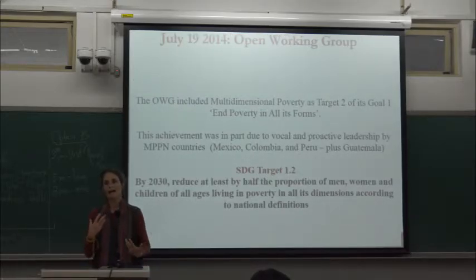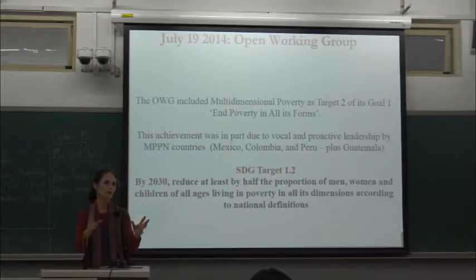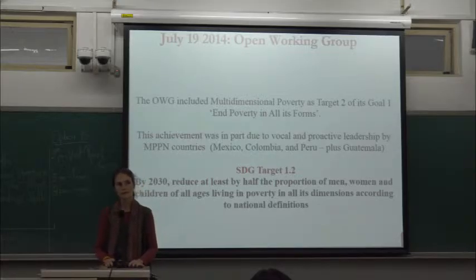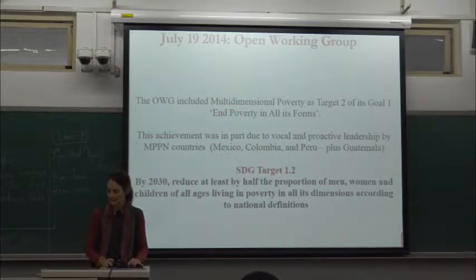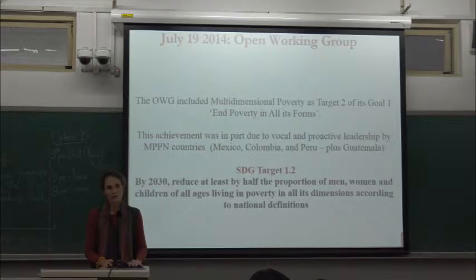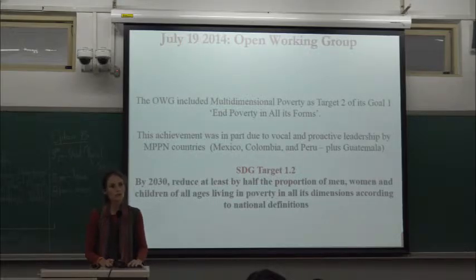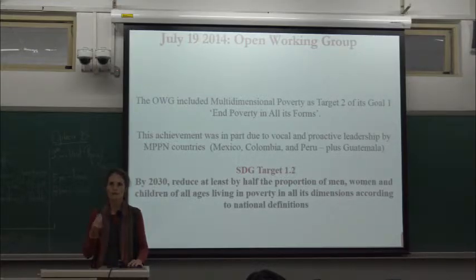The term 'poverty in all its forms and dimensions' is mentioned a number of times in the final document. An open working group met a number of times at the United Nations and proposed the same 17 goals and 169 targets. That document included multidimensional poverty in Target 1.2, which came about politically due to the activism of Mexico, Peru, Colombia, and Guatemala towards the end of those open working group sessions.